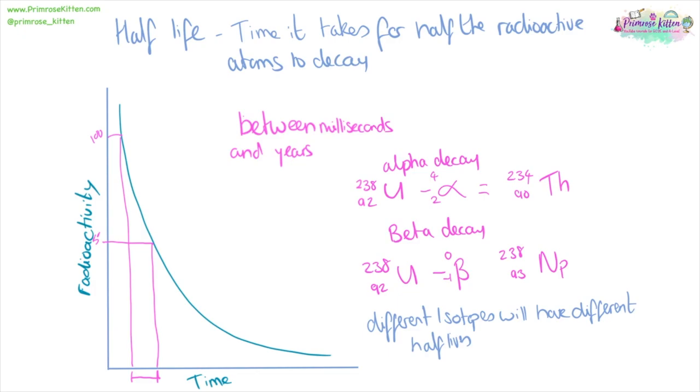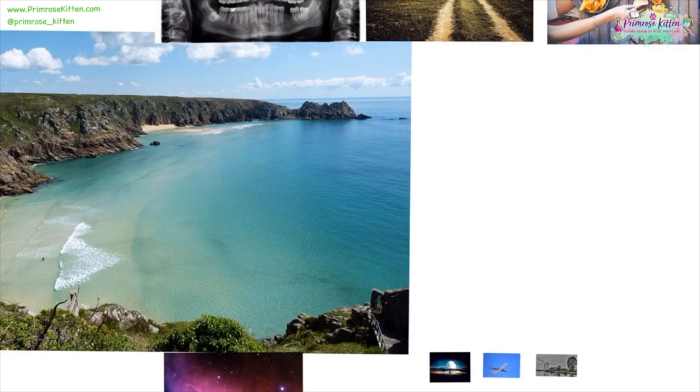Different isotopes of an element are going to have different half-lives. You need to know all of the different sources of background radiation. Now the majority of background radiation comes from radon gas. This is about 50%. And this picture here shows a beautiful scene from down in Cornwall, down in Devon, because that area has a lot of radon gas going on.